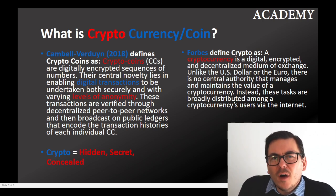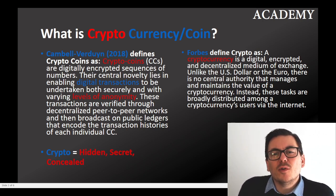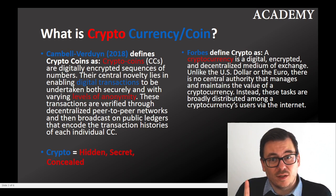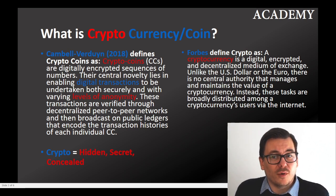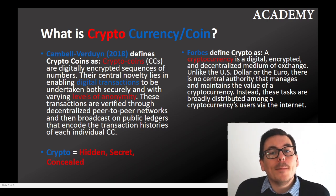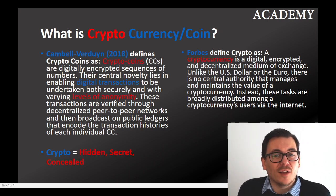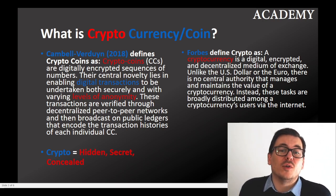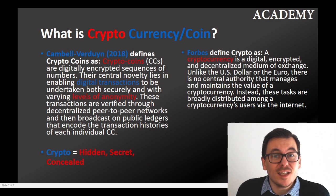Forbes defines crypto as: a cryptocurrency is a digital, encrypted, and decentralized medium of exchange. Unlike the US dollar and the euro, there is no central authority or central bank that manages and maintains the value of a cryptocurrency. Instead, these tasks are broadly distributed among cryptocurrency users via the internet.